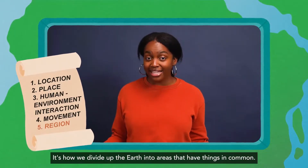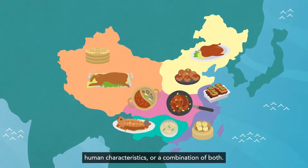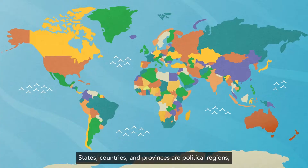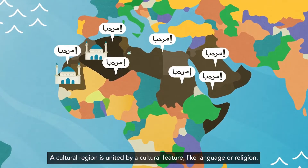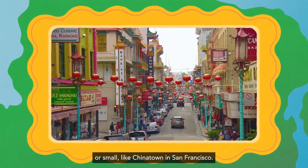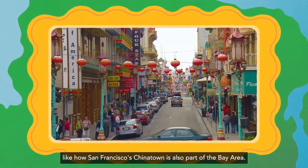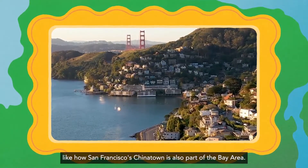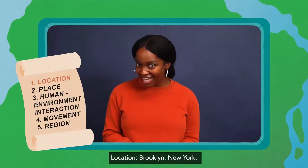The last theme is region — it's how we divide up the earth into areas that have things in common. A region might share physical characteristics, human characteristics, or a combination of both. States, countries, and provinces are political regions — they're defined by borders created by a government. A cultural region is united by a cultural feature like language or religion. Cultural regions can be big, like the Arab world, or small, like Chinatown in San Francisco. One place can be part of more than one region.